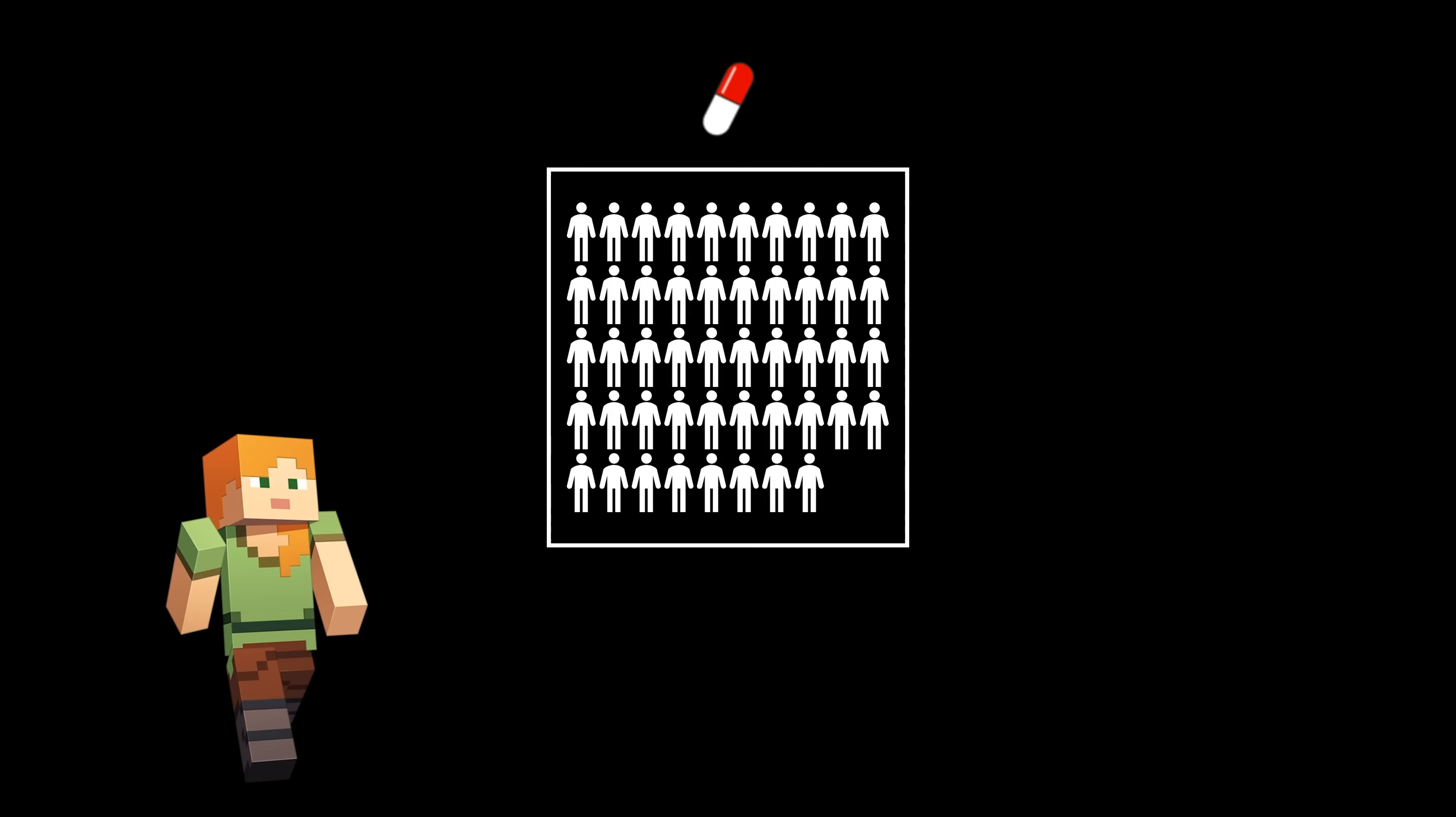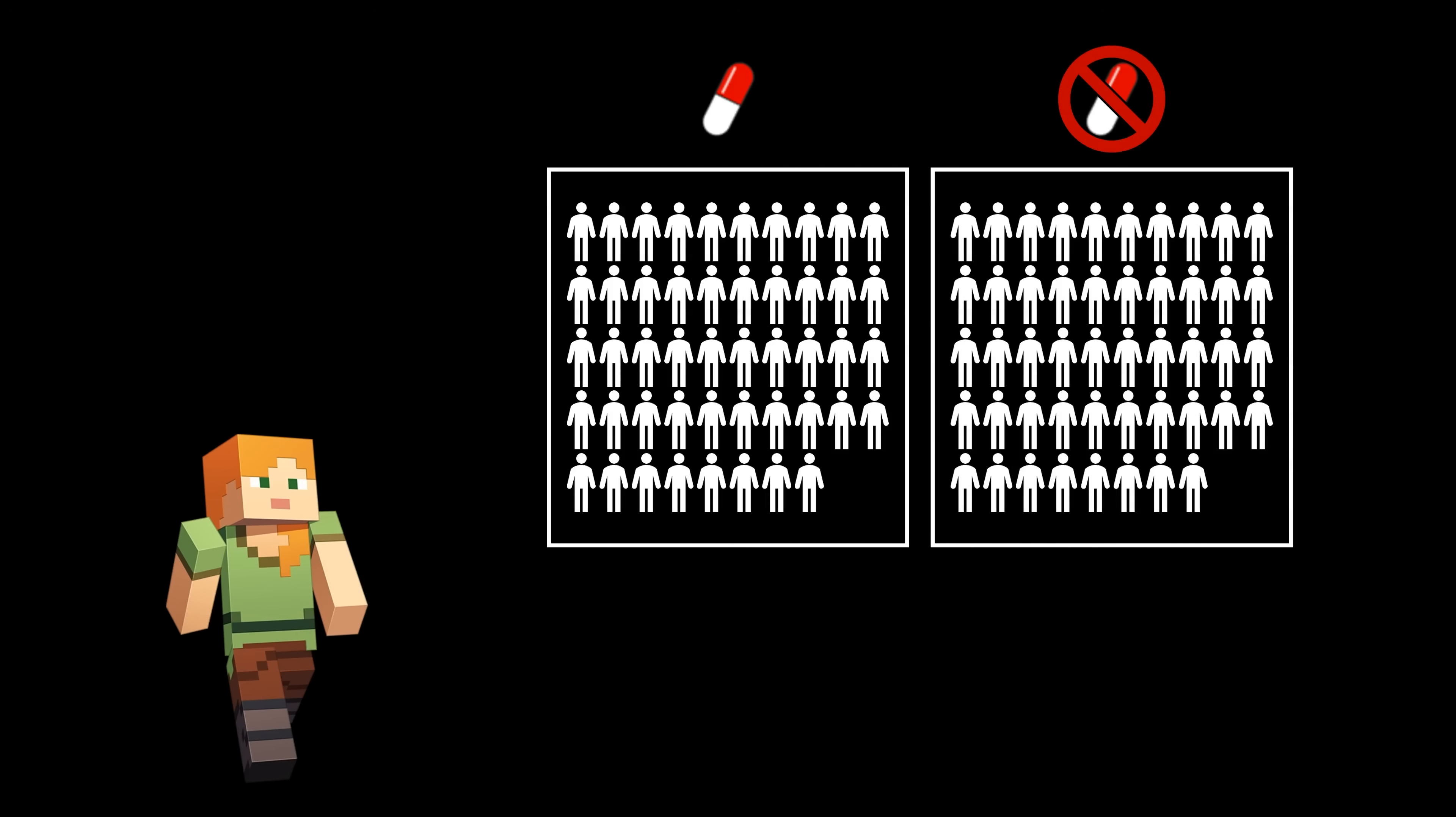Hypothesis tests can take on many different forms depending on the question we're trying to answer. To give another example, say we want to test the effectiveness of a new type of drug. We can give the new drug to a group of sick people, and a fake placebo pill to another group of sick people, and record how many people recover in each group.